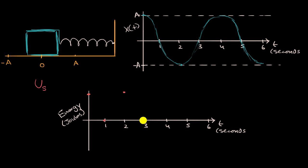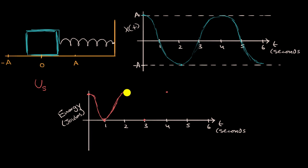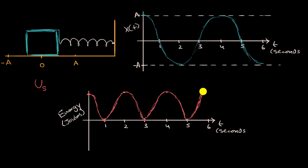At three seconds, all of that potential energy is back converted to kinetic energy. At four seconds, we're back at position A and it's back into potential energy. So the graph of our elastic potential energy oscillates accordingly — it never goes negative — and would look something like this wave pattern repeating over time.